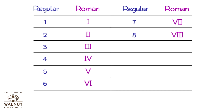9 is written as I followed by X. 10 is X. 11 is X followed by I. 12 is X followed by two I's.